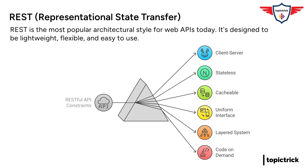Welcome back to our deep dive on APIs. Last time we left off talking about those six key constraints that define a RESTful API — the client-server, stateless, cacheable, and all those. Today we're going to unpack one of the most crucial ones: the uniform interface.